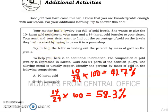Your mother has a jewelry box full of gold jewels. She wants to give the 10 carat gold necklace to your aunt and a 14 carat gold bracelet to your sister. Your aunt and sister want to find out the percentage of gold on the jewels they had received by trying to pawn it in a pawn shop. Try to help the teller in finding out the percent by mass of gold on the jewels. To help you, here is additional information. The composition of gold jewelry is expressed in carats. Gold has 24 parts of the solution or alloy. The alloying metal is usually copper.